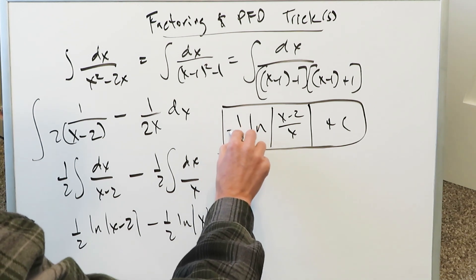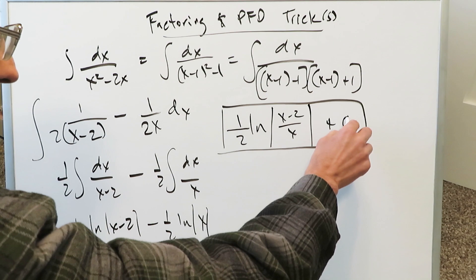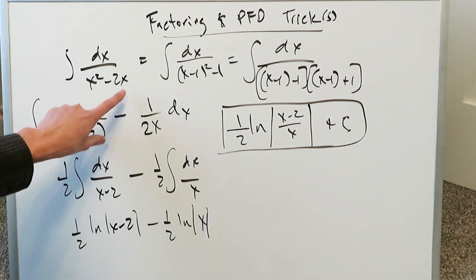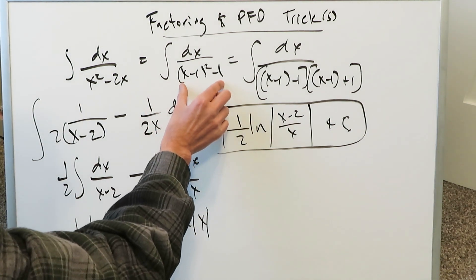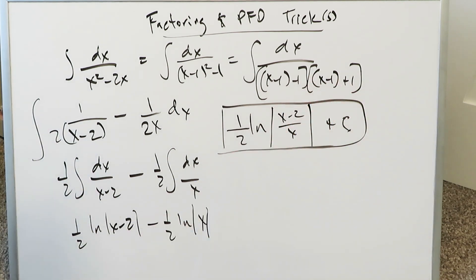We can clean this up here. 1 over 2 natural log absolute value x minus 2 divided by x plus c and it's completed. The whole technique required you to recognize a completing the square technique which could convert very well everything into a square minus b square, a minus b, a plus b format of factors.